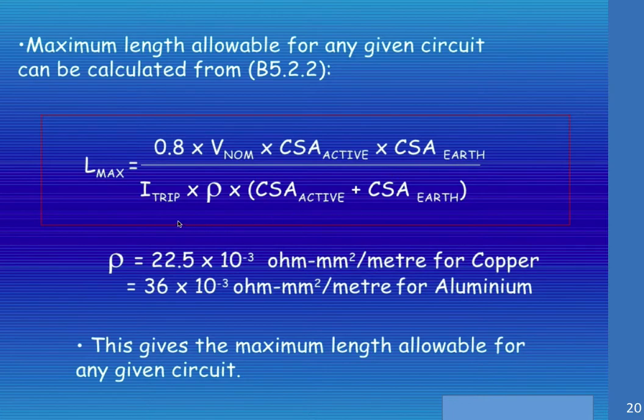On the bottom we have the trip current, the permeability of the material which is going to be copper 99.99% of the time, the cross-sectional area of the active, and the cross-sectional area of the earth again.